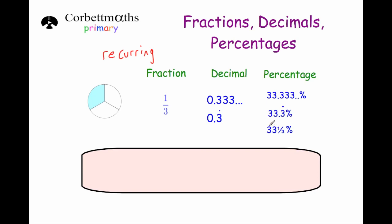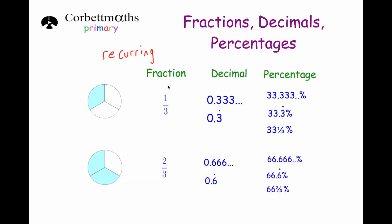Or it could be written as 33 and a third percent. So one third is a bit more complicated than the other fractions. But I find it quite interesting that it goes on forever. And if one third is 0.3333333, two thirds would be double that — 0.6666666 and so on forever, written as 0.6 with a dot above it. As a percentage, that would be 66.6 recurring, or 66 and two thirds percent. And that's it.